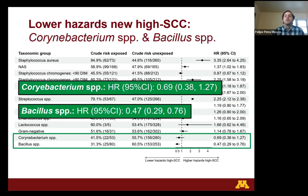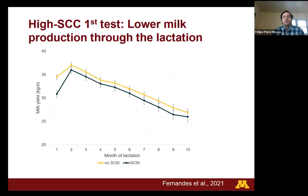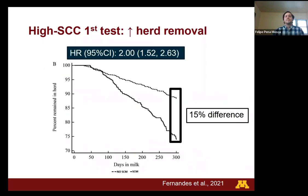The presence of Corynebacterium and/or Bacillus species was related to a reduced hazard of new high somatic cell count. Regarding the association between high somatic cell count in the first month after calving and milk production throughout lactation — cows that did not have high somatic cell count, represented in yellow, had higher milk production throughout lactation compared to cows that did have high somatic cell count, represented in blue. Furthermore, having high somatic cell count in the first month after calving was related to a higher risk of removal from the herd — a difference of as much as 15% by end of lactation.